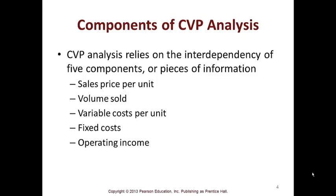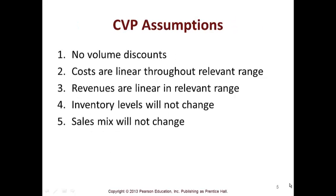CVP analysis relies on the interdependency of five components: sales price per unit, volume sold, variable cost per unit, fixed cost, and operating income. The assumptions are there are no volume discounts, costs are linear, revenues are linear, inventory levels will not change, and sales mix will not change. These are your assumptions when you do this analysis.